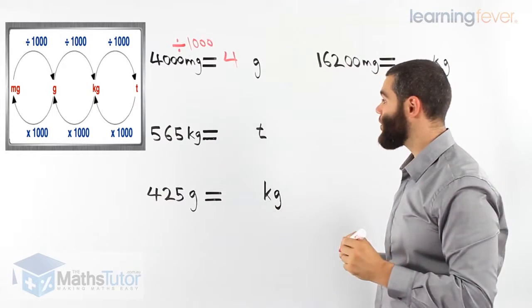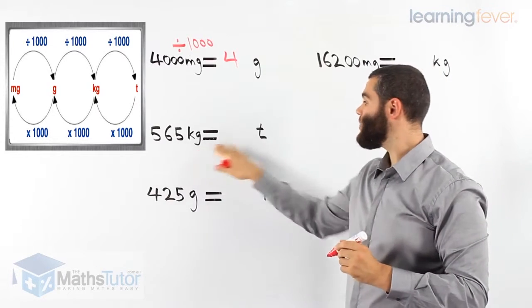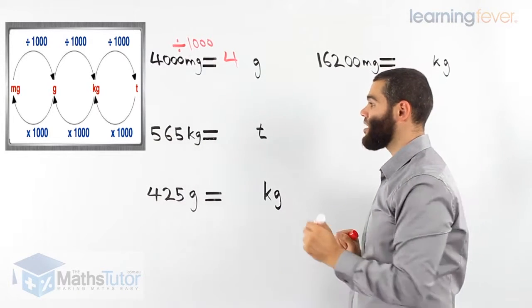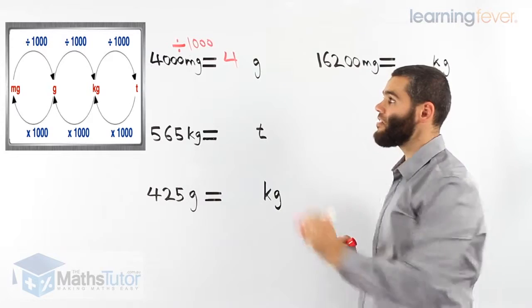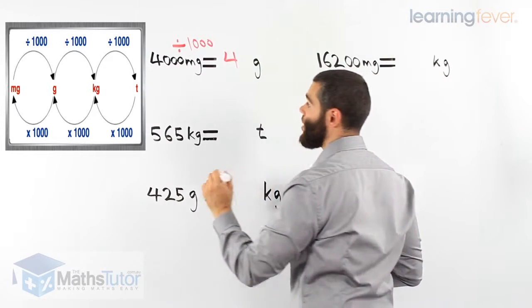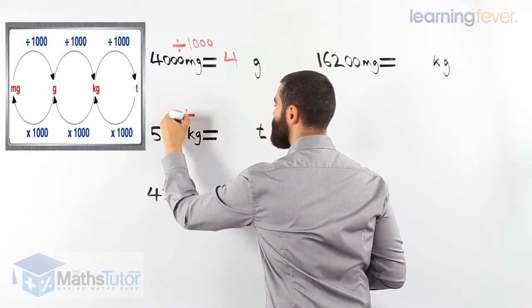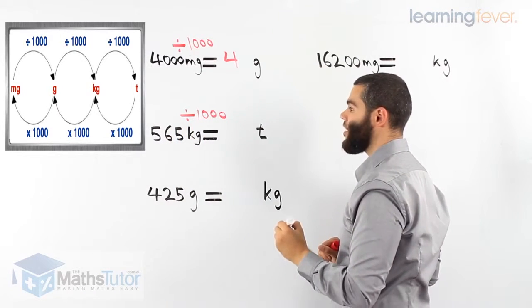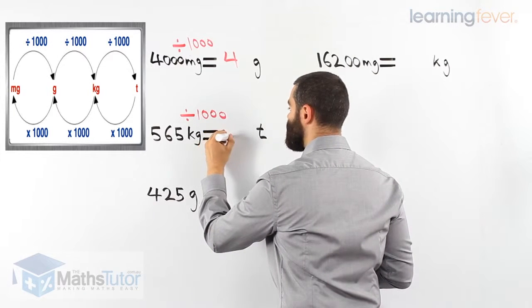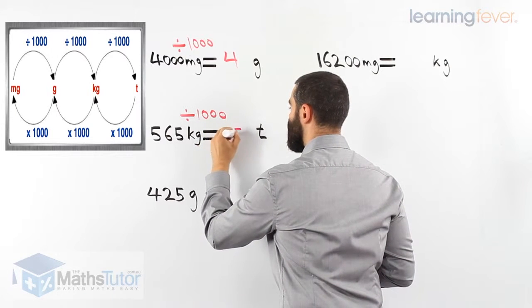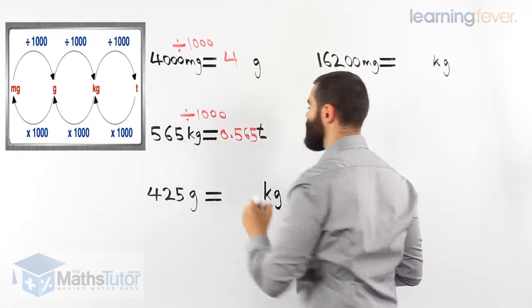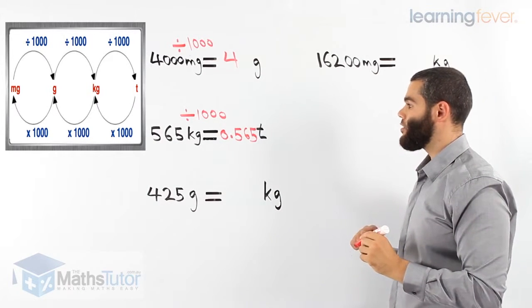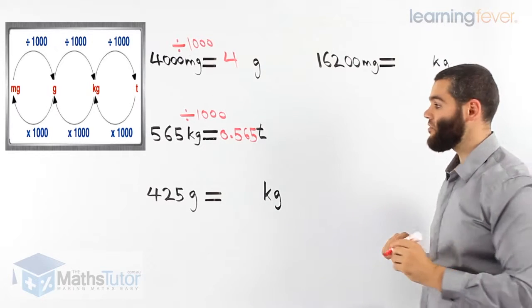In this example, we're going from kilograms to tons — from a small unit of mass to a larger unit of mass. Kilograms to tons: the process says we have to divide by a thousand. Five hundred and sixty-five kilograms divided by a thousand gives zero point five six five tons. Put it in your calculator and you get zero point five six five.